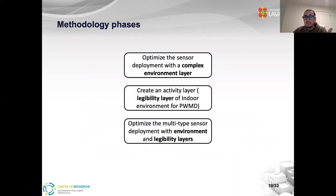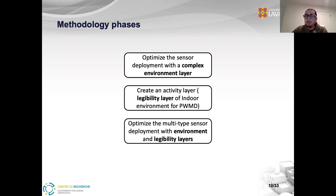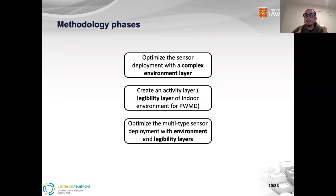To achieve these objectives, three methodological phases were organized. The first phase was to optimize sensor deployment with a complex environment layer without consideration of the activity layer. The second phase was to create an activity layer — specifically, the legibility layer of the indoor environment for people with motor disability. The last phase was to optimize multi-type sensor deployment within the legibility layers.